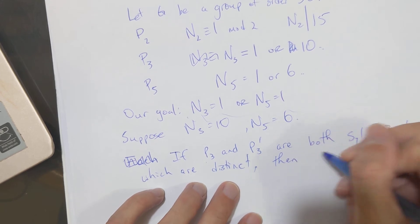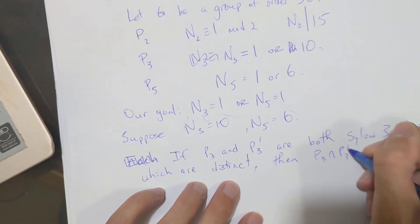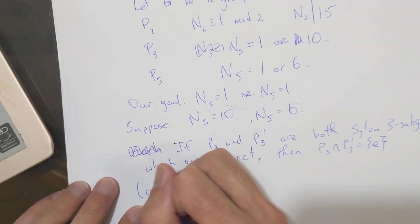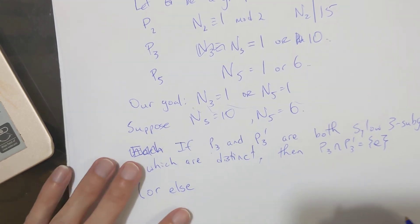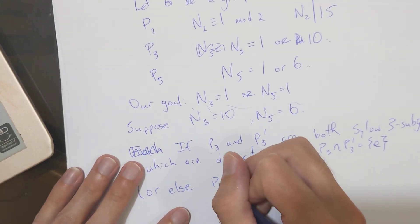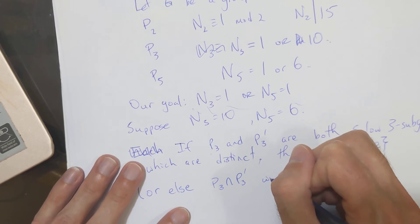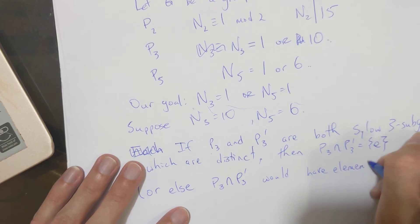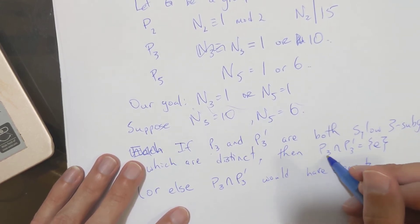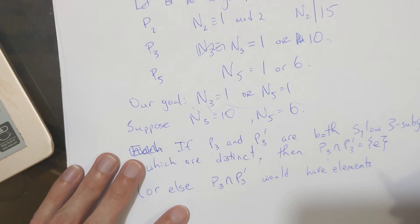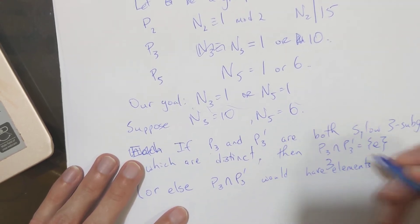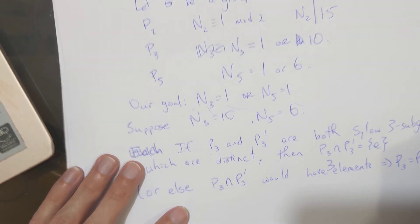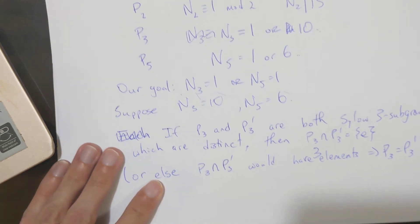Okay. So then, P3 intersect P3 prime would be trivial. Or else, P3 intersect P3 prime would have three elements. It can have either one or three elements, because P3 intersect P3 prime is a subgroup of P3, which has three elements. So it would have three elements, and that would imply that P3 equals P3 prime.